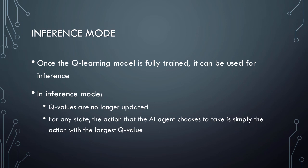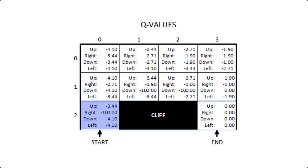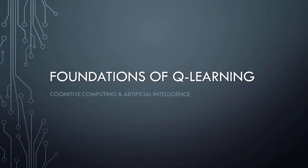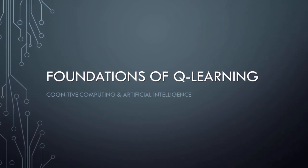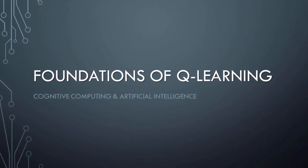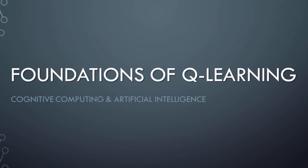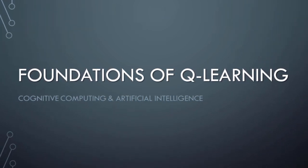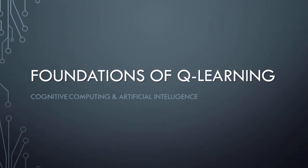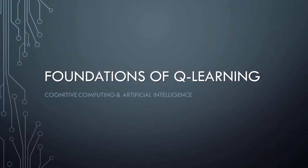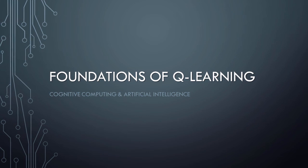Finally, once the Q-Learning model is fully trained, it can be used for inference. In a practical sense, this means that the AI agent can use the policy to make decisions in real-world situations. Once the model is running in inference mode, Q values are no longer updated, and for any state the action that the AI agent chooses to take will simply be the action with the largest Q value. In the next video in this series, we'll see how Q-Learning-based AI can be used to solve a warehouse robot routing problem, with practical hands-on experience creating an AI model in Python. Thus ends our lesson on the foundations of Q-Learning. I hope you learned something interesting, and until next time, have a great day.